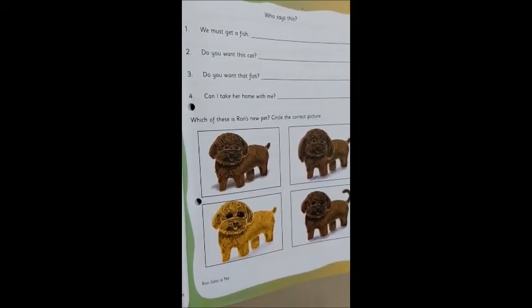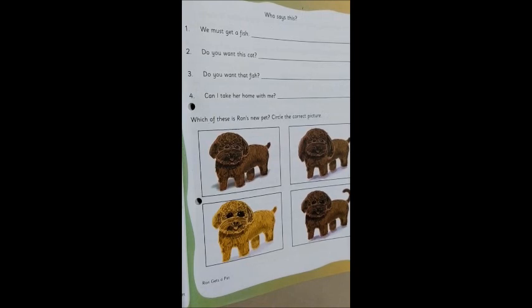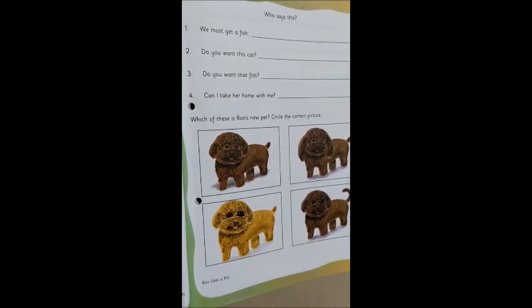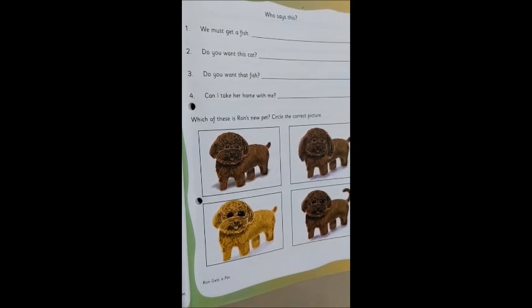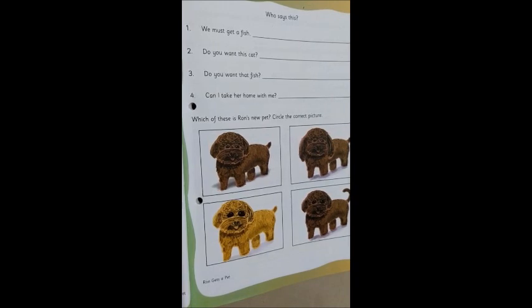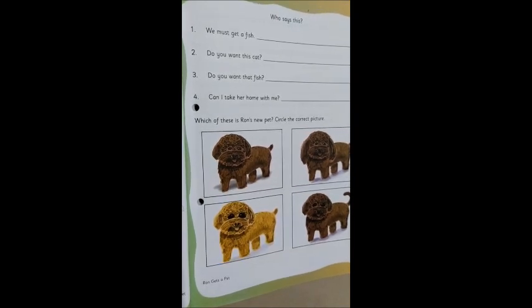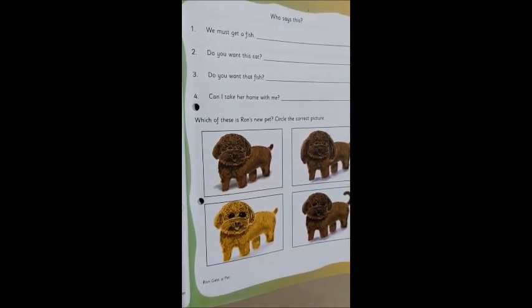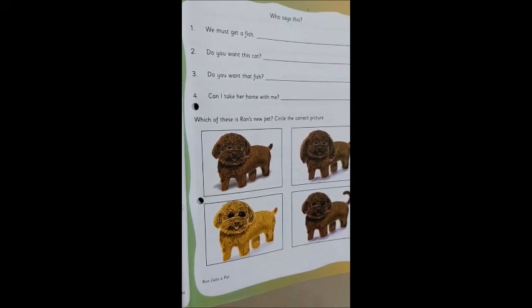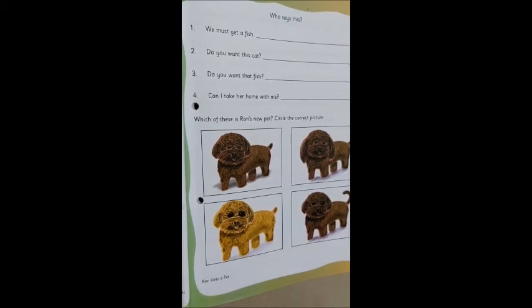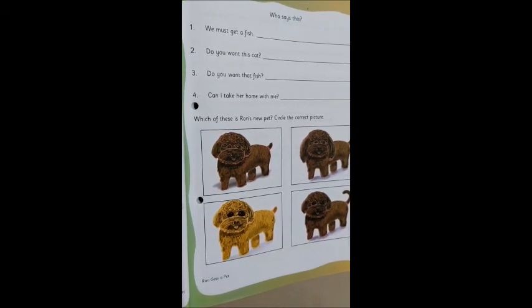Yes, now in the next page, page number 25, what do we have to do? Let me tell you who says this. So, you have to remember the story, Ron gets a pet. And you have to think which character said these words. Right. We must, read with me. We must get a fish. So, let's read it once more.